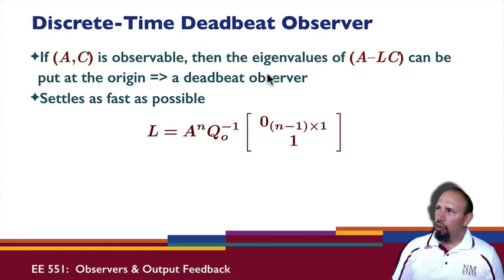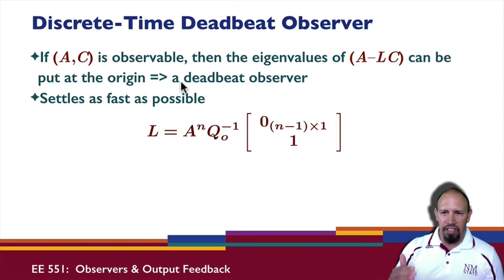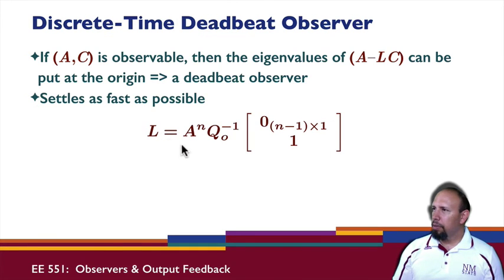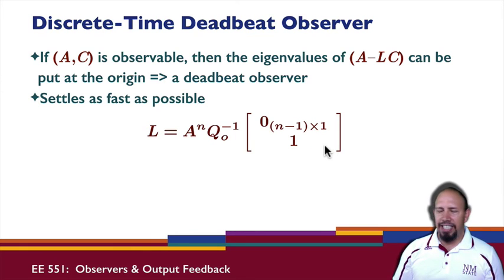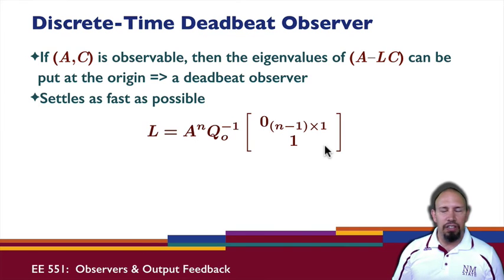Placing all eigenvalues at the origin gives us what's called a deadbeat observer. The concept of a deadbeat system means it converges right on. This is the formula for the deadbeat observer - A^n basically ensures that the resulting closed-loop matrix (A - LC) is a nilpotent matrix, which is what this achieves for us.